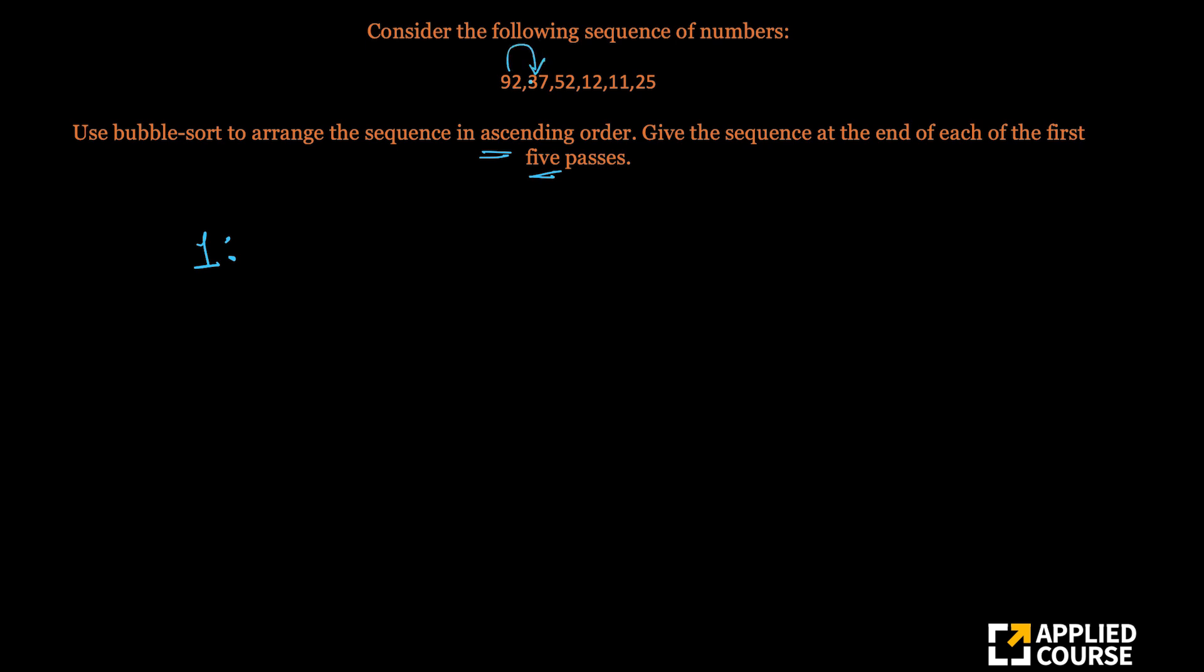So 92 would get swapped with 37. So 37 will become the first element, 92 would be here. 92 would again get swapped with 52, so you would have 52 here. 92 is the largest element. So you will have 12, 11, 25 and 92. This is what you will have at the end of first pass.